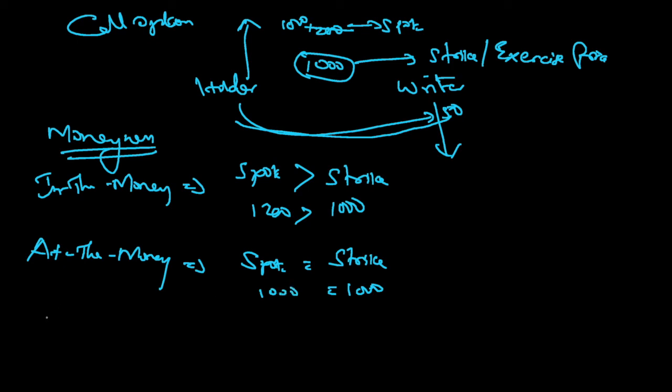And what is out-of-the-money? Out-of-the-money is when your spot is lower than the strike price. So here, let's say it is 900, which is lower than strike 1000. Moneyness tells you the status based on spot and strike price. This is for call options.